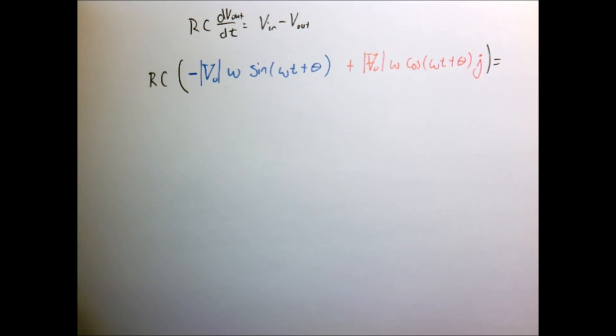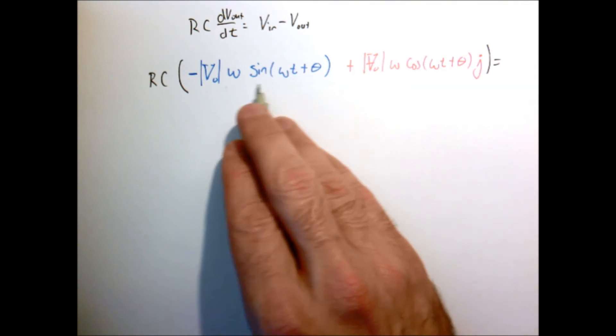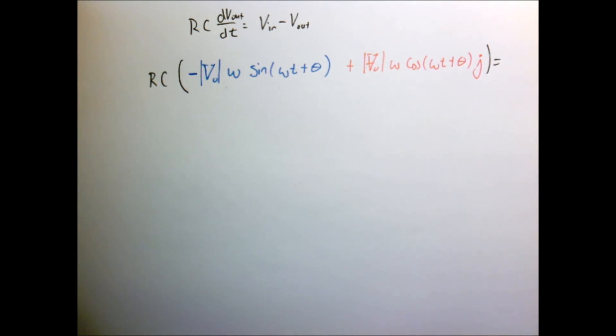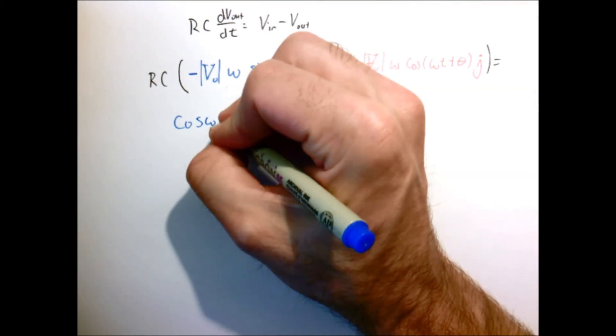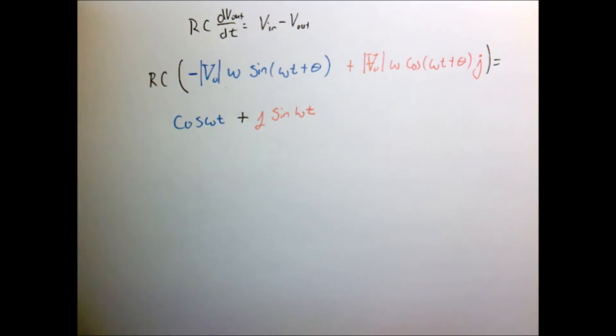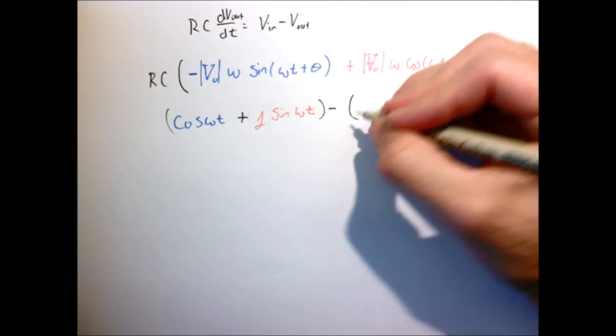And now let me just put in our assumed forms for V in and V out using our sine and cosine notation. And I'm keeping my real terms as blue and my imaginary terms as red. So that's V in.